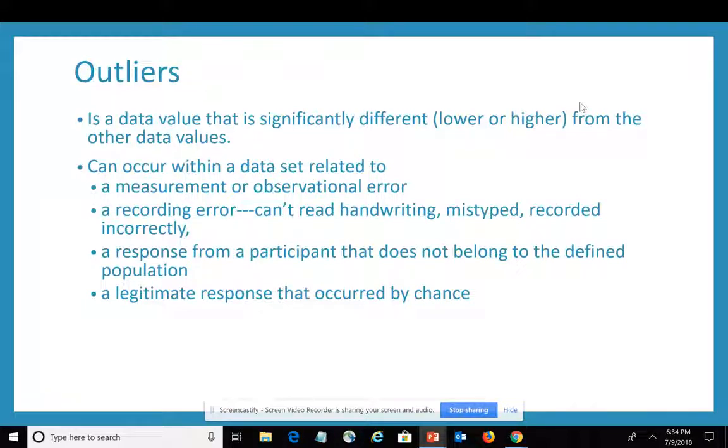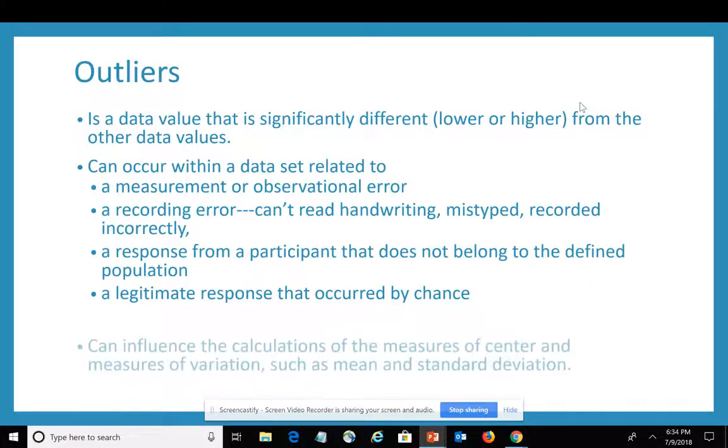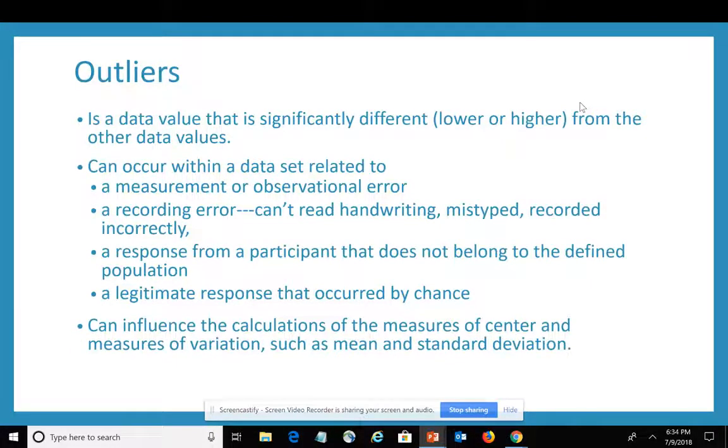We always want to think about whether we have any outliers within our data set because those outliers—those really low or really high numbers—can influence the calculations of the measures of center like the mean, the median, the mode, as well as your measures of variation—things like the range, the variance, and the standard deviation.